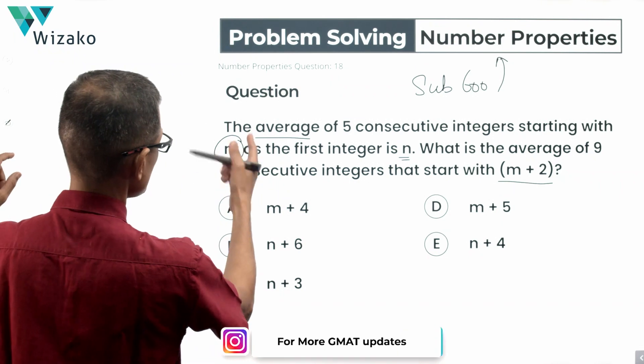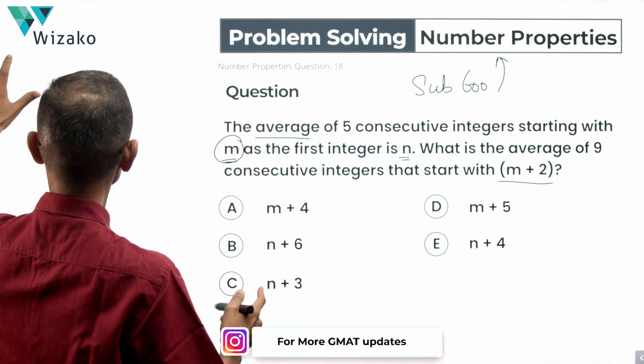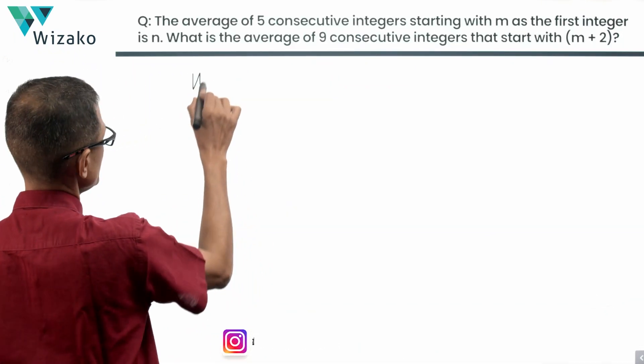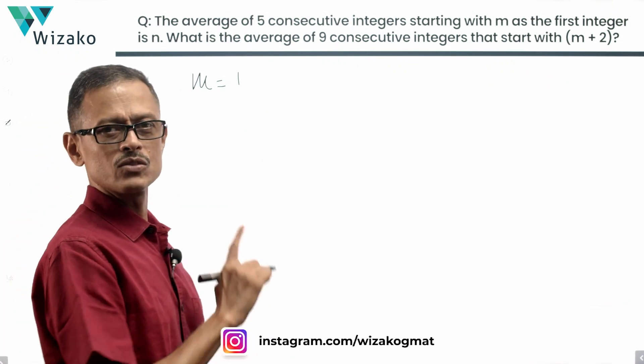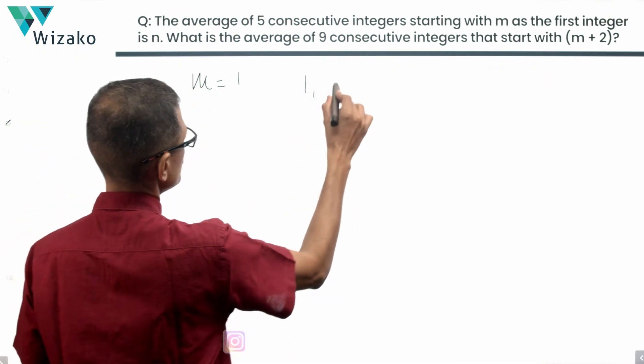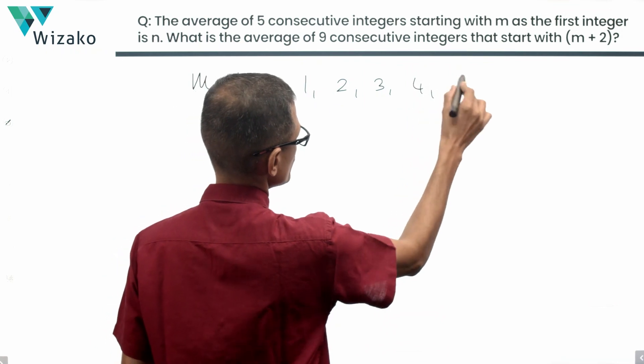So what are we going to do? We are starting this first sequence of five consecutive integers with m as the first number. So I'm going to take m to be equal to 1. So five consecutive integers starting with 1: 1, 2, 3, 4, 5.